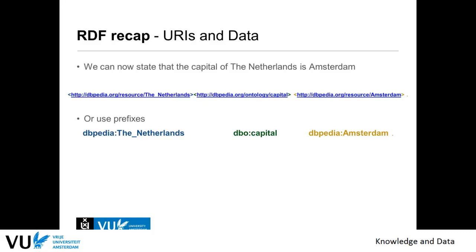These are described on DBpedia, which is a linked data version of Wikipedia. We refer to DBpedia — the website contains a resource Netherlands, predicate capital, which is a semantic relationship, and a resource Amsterdam. Instead of writing out dbpedia.org/resource in full, we can use prefixes. We say DBP as a shorthand and use this throughout the query.